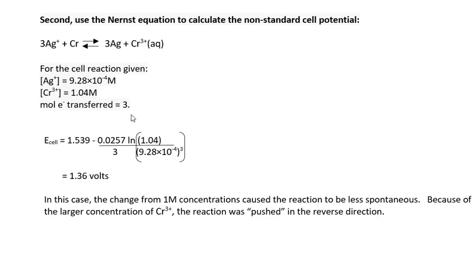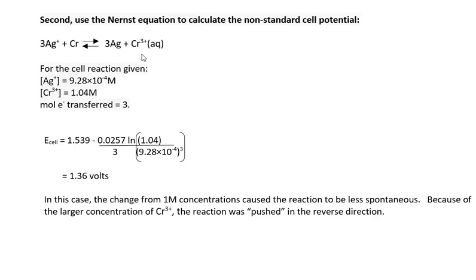Then finally, we substitute the concentration values into the Nernst equation where Q has 1.04 for the chromium product value in the numerator, and 9.28 times 10 to the minus 4 in the denominator. From these values, we calculate a cell potential of 1.36 volts, slightly lower than the standard cell potential. This is something we anticipated, because the concentration of the product was much larger than the concentration of the reactant, therefore pushing the equilibrium in the reverse direction and making the reaction less spontaneous.